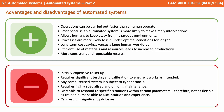There are clearly many advantages to automated systems. In general, operations can be carried out faster than a human operator. It's safer, as an automated system is more likely to make timely interventions, and it allows humans to keep away from dangerous chemicals and other hazardous environments. Processors are more likely to run under optimal conditions and for longer, and there are long-term cost savings over a large human workforce. Automated systems also make more efficient use of materials and resources, resulting in higher productivity, and especially in science and medicine, produce more consistent and repeatable results.